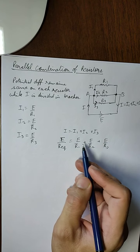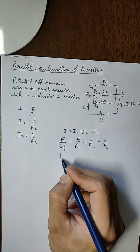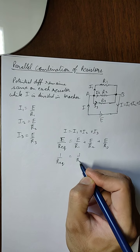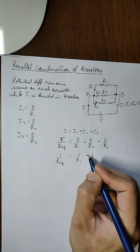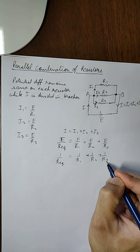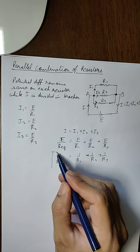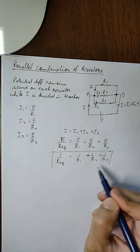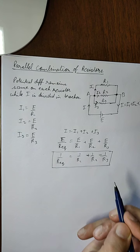Now taking E common on both sides, E will be cancelled out, and the result that we will get will be this. So this will be our formula to calculate the equivalent resistance in parallel combination.